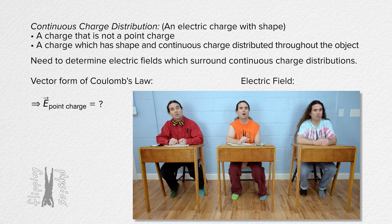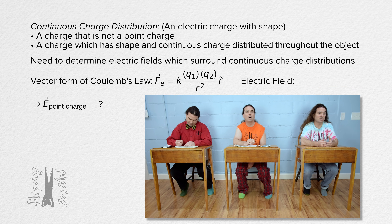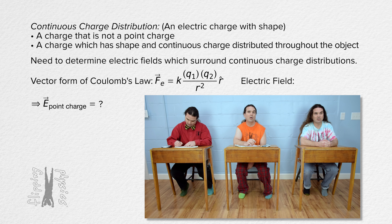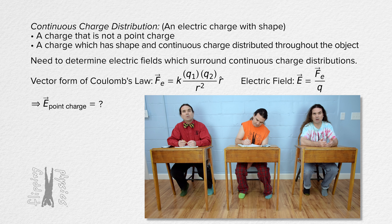The vector form of Coulomb's law states that the electrostatic force which exists between two point charges equals the Coulomb constant times charge 1 times charge 2 divided by the square of r, the distance between centers of charge of the two charges, all times unit vector r. The equation definition of the electric field is electric field equals electrostatic force divided by charge, where both electric field and electrostatic force are vectors.